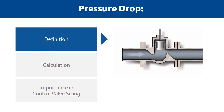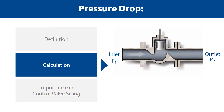Pressure drop is the difference in pressure as measured between two points in a pipe with flowing fluid. For a control valve, the pressure drop is the difference between the inlet pressure and the outlet pressure, and it varies with flow. The calculation is delta P equals P1 minus P2. Pressure drop is usually measured in pounds per square inch differential, or PSID.